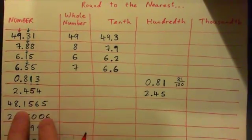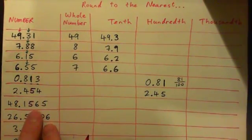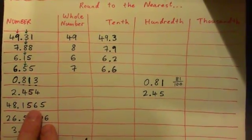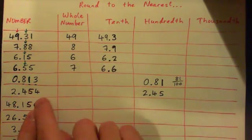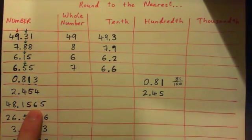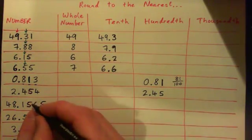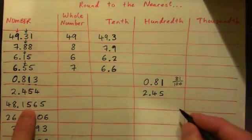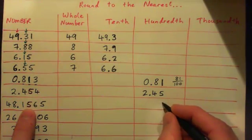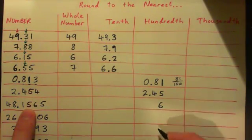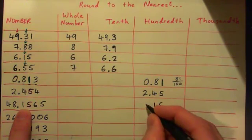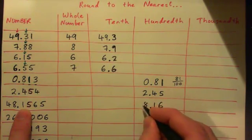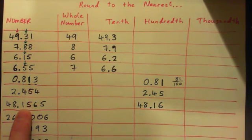What comes after the five? A six. Okay, so if it's five or more you've got to round up. So we round up and this five becomes a six. And then of course you just keep the rest of the number. Does that make sense?